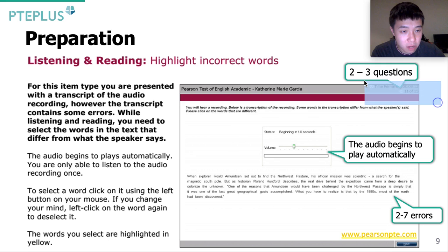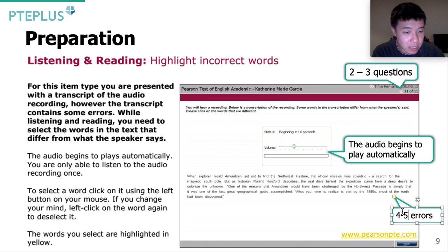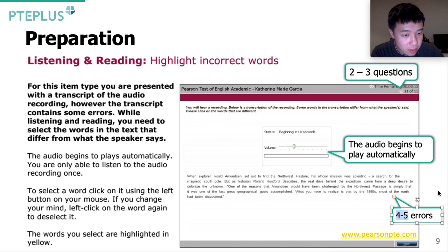This is the exam interface you will face in the actual exam. On the top right corner, we can see a timer that tells you the time remaining for the entirety of the second section — not just for one question. You can also see how many questions are left. You'll be facing two to three questions of Highlight Incorrect Words, with about 10 seconds to go through the text briefly before the audio starts to play automatically. There are about four to five errors in the actual exam. The scoring criteria is that you get one mark for each mistake highlighted, and you lose one mark for each incorrect word highlighted.